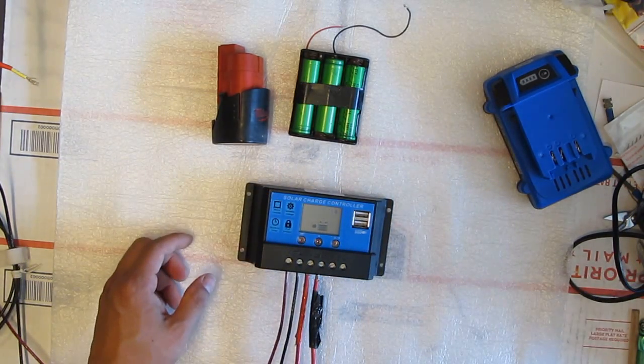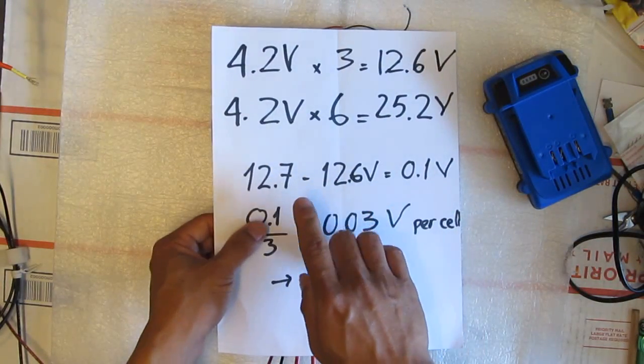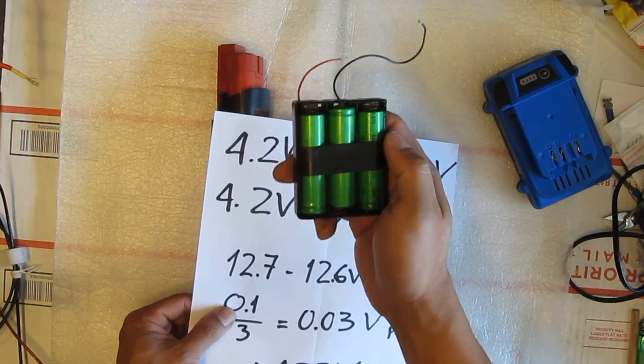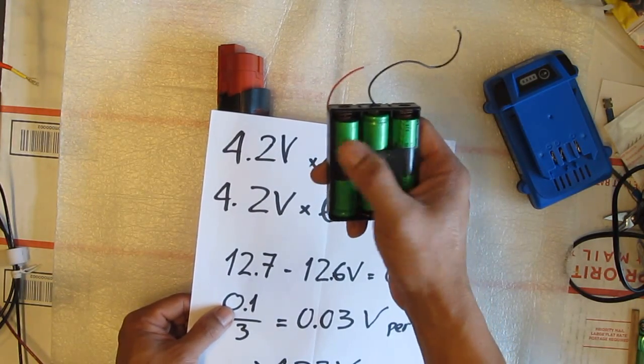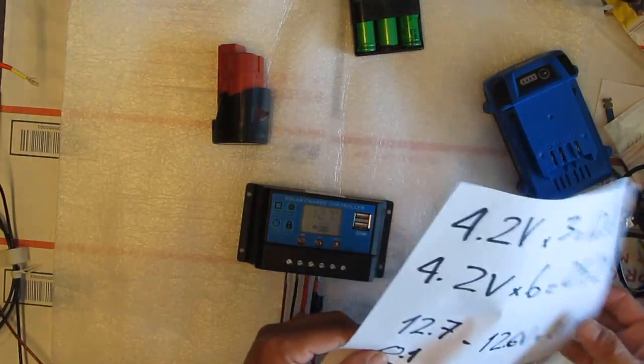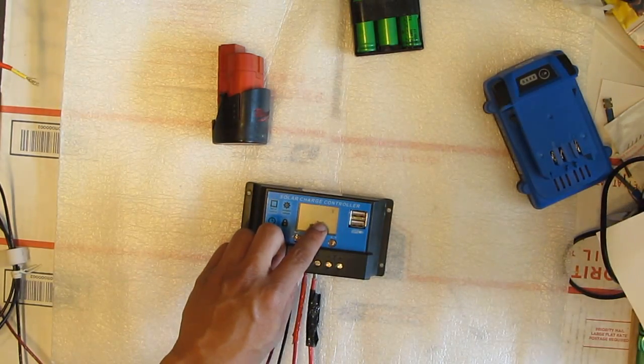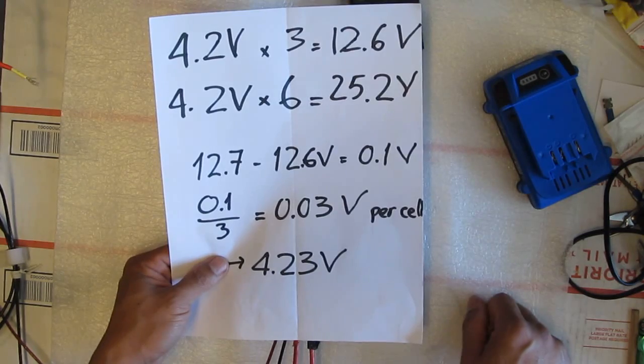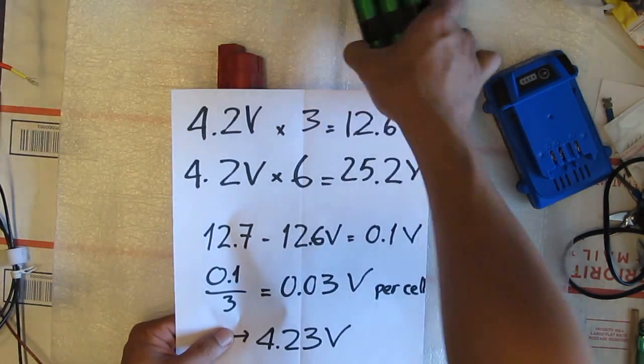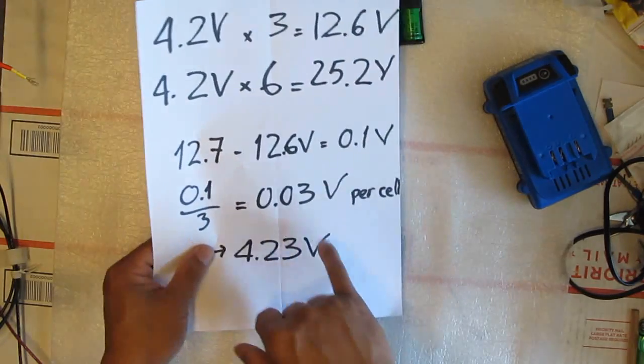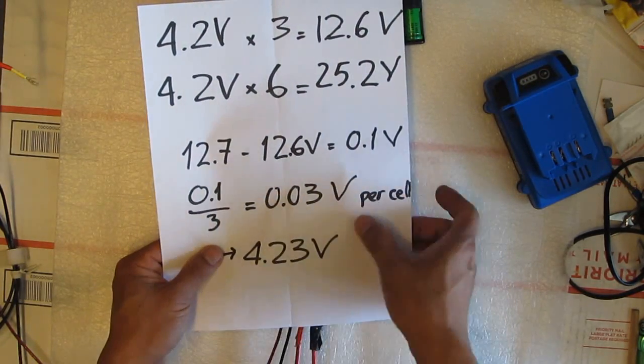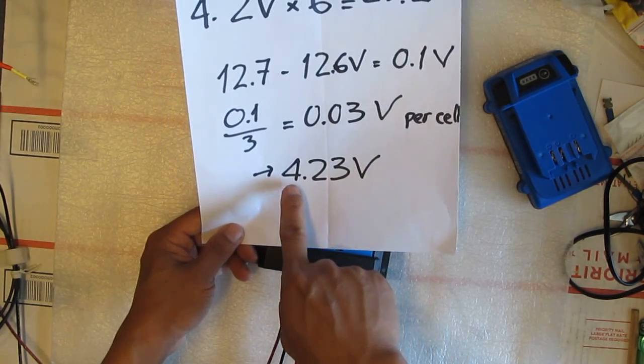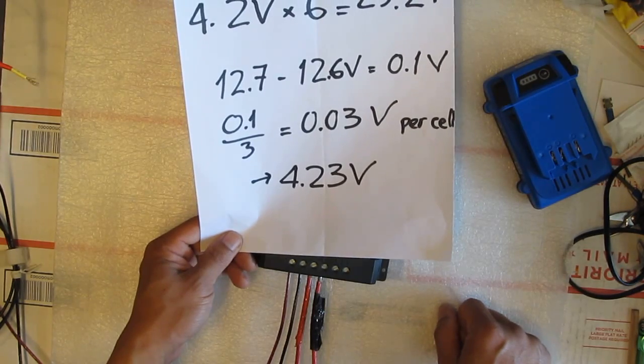And it is a little bit over voltage because the maximum that you can charge this safely is at 4.2 volts each cell. So three of these 12.6. This charge at 12.7 max. So it's going to be 0.1 volts over voltage. But if you divide by three, three cells, you divide that by three, you got the 0.03 volts over voltage per cell. That will make it up to 4.23 volts each cell.